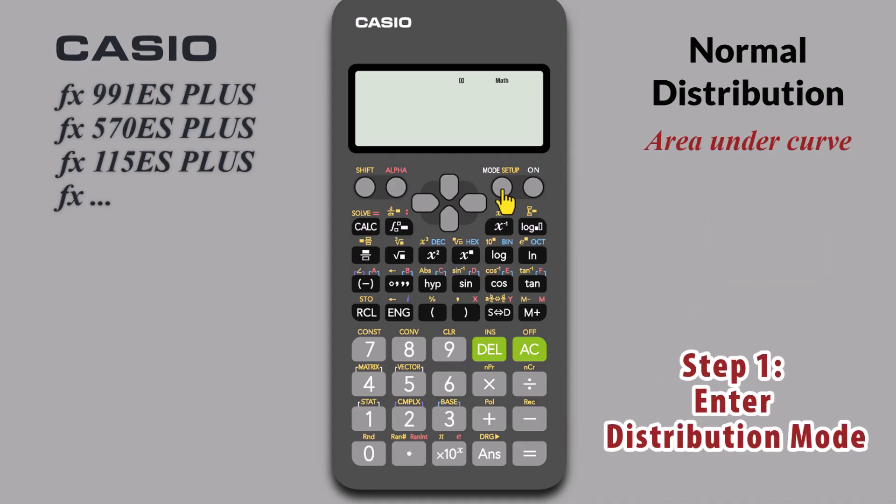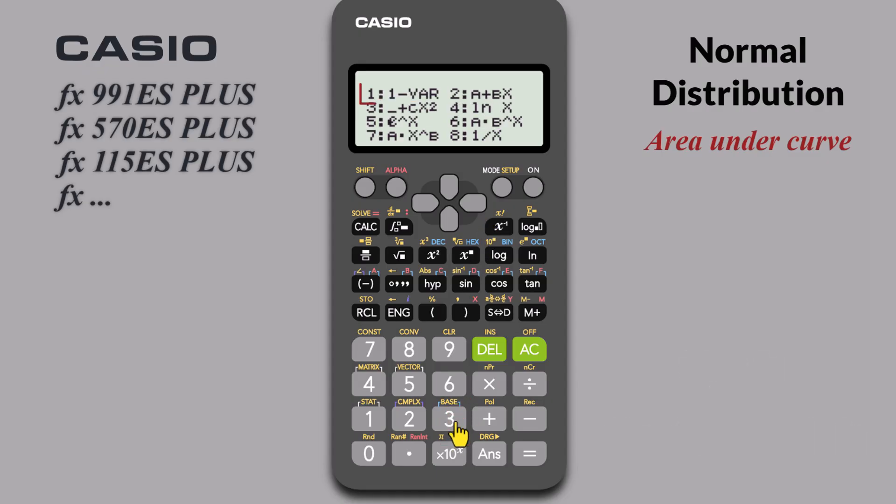To begin, press MODE. Then select 3 for start. Next choose 1 VAR by pressing 1. Since we are not entering raw data, press AC to clear. Press SHIFT then 1. For areas under the normal curve, choose DISTR or DISTRIBUTION by pressing 5.